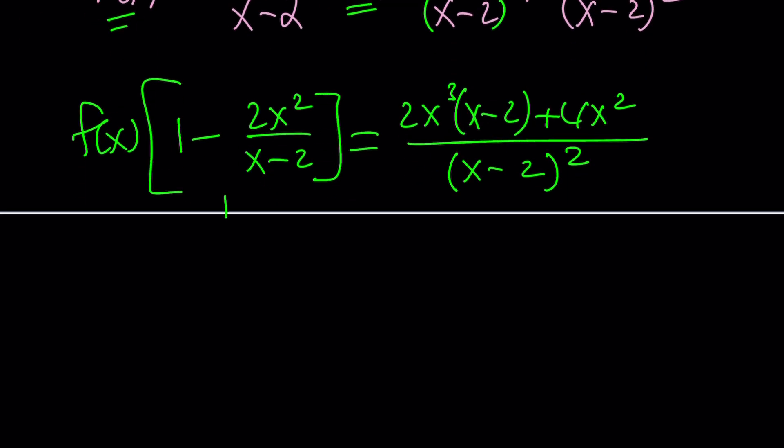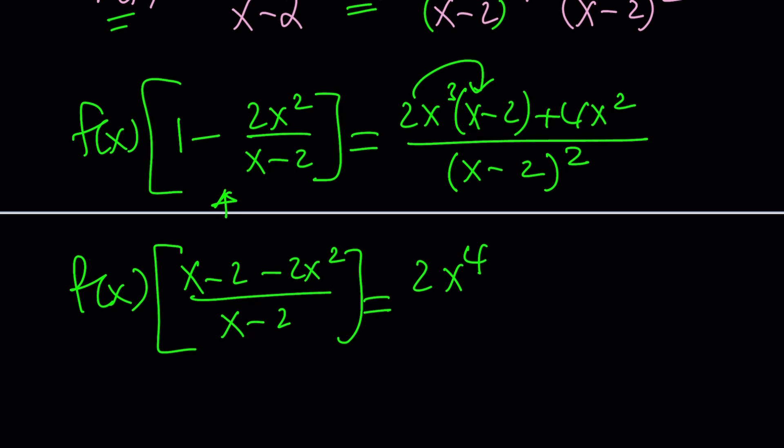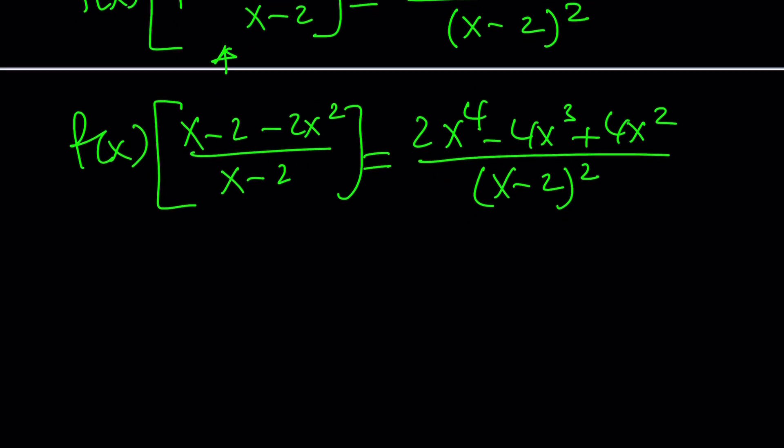And we're going to get 1 minus 2x squared over x minus 2 equals, now to be able to add these, we're going to multiply by x minus 2. So this will be 2x cubed times x minus 2 plus 4x squared divided by x minus 2 quantity squared. Let's go ahead and simplify this as well. So f of x times x minus 2 minus 2x squared over x minus 2. And then on the right-hand side, we can combine these. This is 2x to the fourth and then minus 4x cubed plus 4x squared divided by this one. And don't expand it because this is going to simplify.